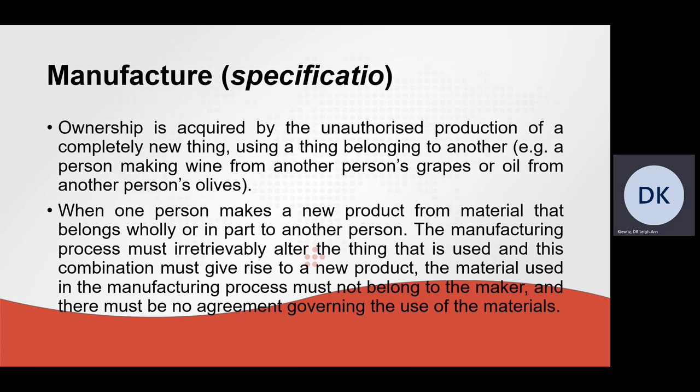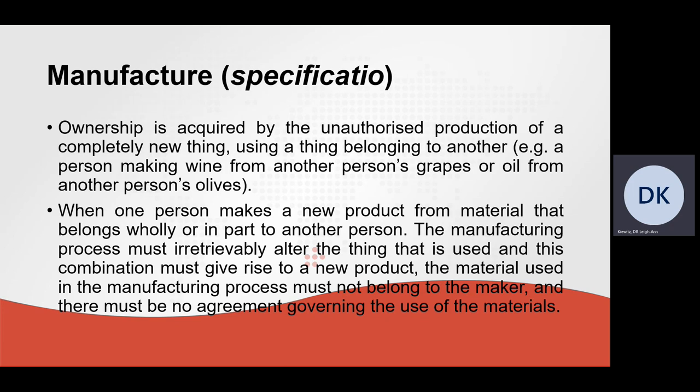Another example of original acquisition of ownership is manufacturing, otherwise known as specificatio. Ownership is acquired by the unauthorized production of a completely new thing using a thing belonging to another. For example, a person making wine from another person's grapes will become the owner of the wine even though it is not his or her grapes that were used. Or in the case of oil from another person's olives, the maker becomes the owner of the oil irrespective of the fact that the olives did not belong to him. The manufacturing process must irretrievably alter the thing that is used, the combination must give rise to a new product, and the material used must not belong to the maker.